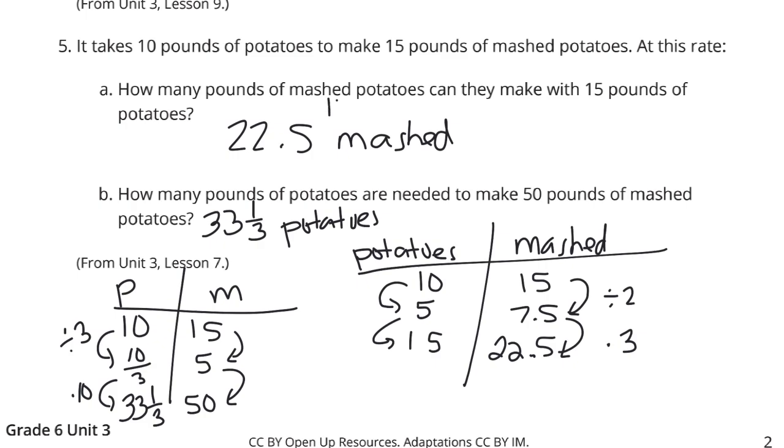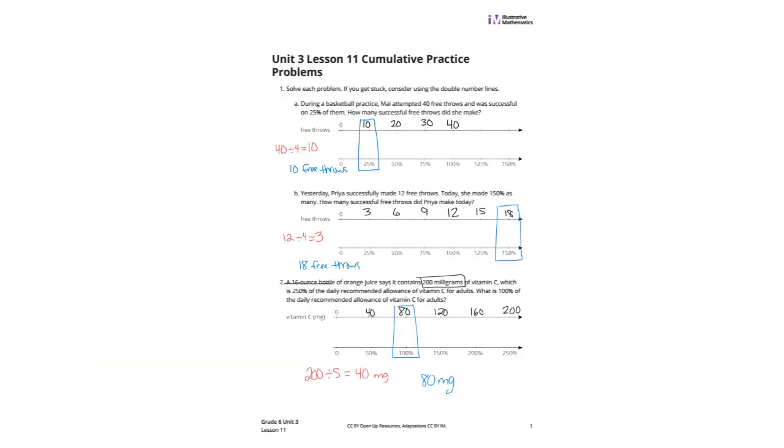So, you'll need 33 and a third pounds of regular potatoes, and these are both in pounds, by the way, to get the 50 pounds of mashed potatoes. That's a lot of mashed potatoes. That is it for this lesson on grade 6, unit 3, lesson 11 on percentages and double number lines. Good luck.